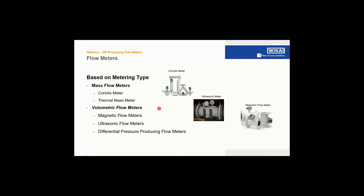We start with a general view about flow meters. Flow meters are put into two types: mass flow meters and volumetric flow meters. There are very few mass flow meters — a Coriolis meter and a thermal mass meter. The bulk of the flow meters are volumetric, divided by technologies such as magnetic flow meters, ultrasonic flow meters, and the largest group: differential producing flow meters.